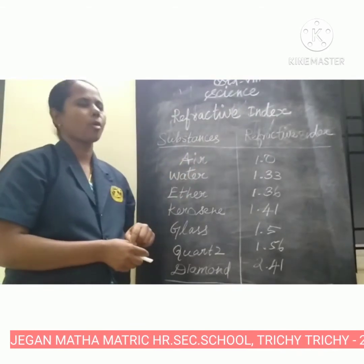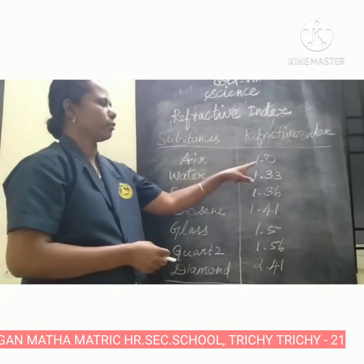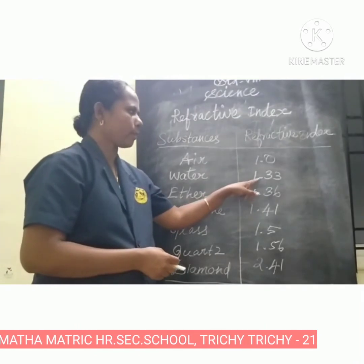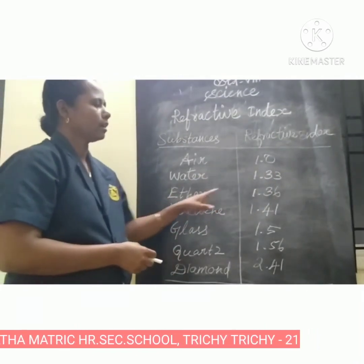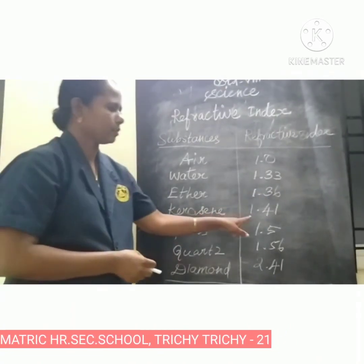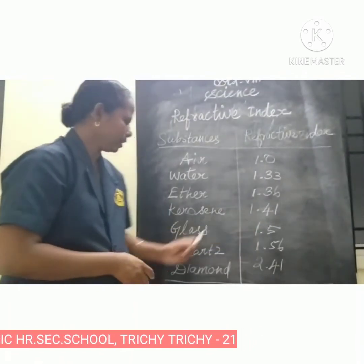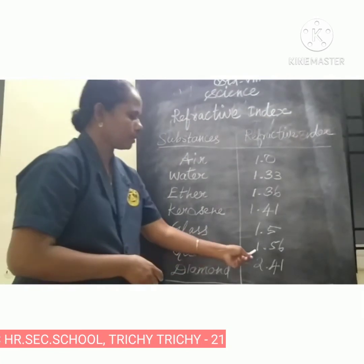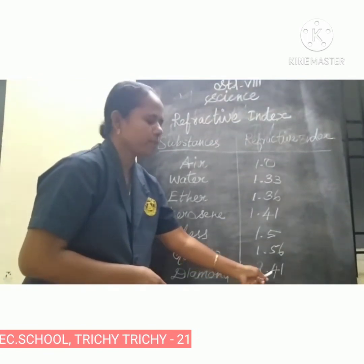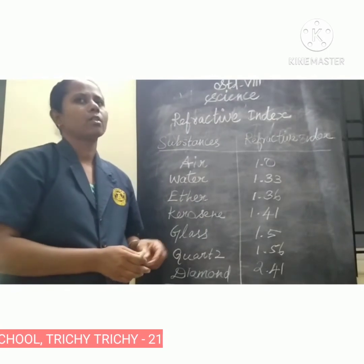Refractive index of some common substances: Air has a value of 1. Water has a refractive index value of 1.33. Ether is 1.36. Kerosene is 1.41. Glass is 1.5. Quartz is 1.56. And diamond is 2.41. These are the refractive indices of common substances.